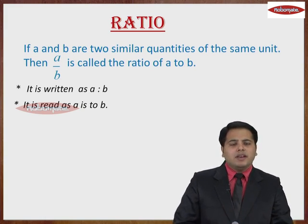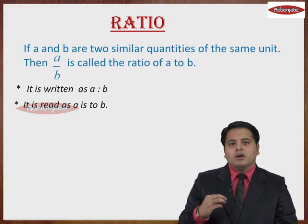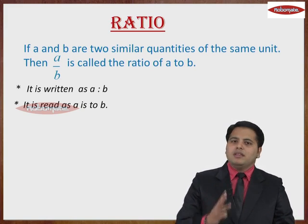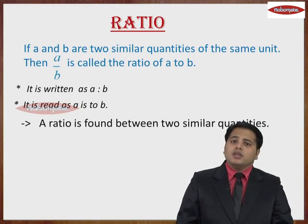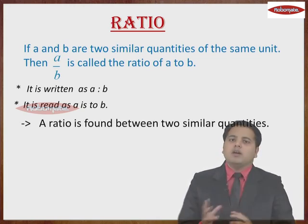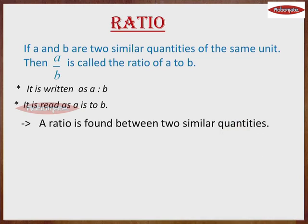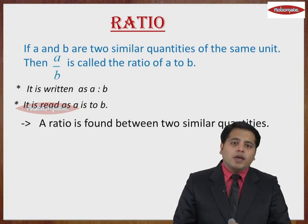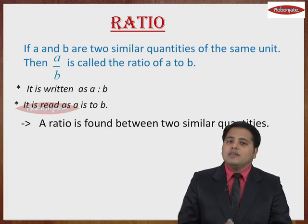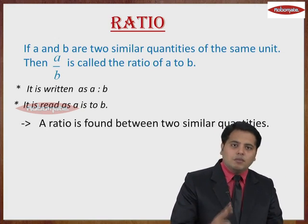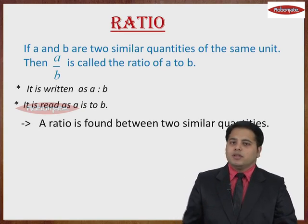Now by Ratio, we basically mean something upon something. But there are 3 things that you need to understand. The first is, a ratio is always found between 2 similar quantities. Means, you cannot compare your weight with your friend's height or either way. We can compare only height with another height or weight with another weight. So it is always a comparison between 2 similar quantities with the same units.